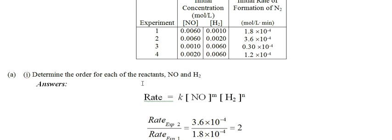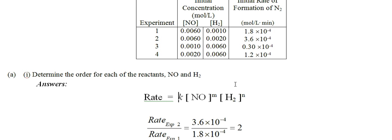Part A asks: determine the order for each of the reactants, NO and H₂. Our generic rate law looks like this — remember, the rate law always includes the word rate, also has the K constant which we'll calculate at some point, and then the concentrations. We don't know what the orders are. In this question, it looks like we have concentrations that are identical in both of these columns.